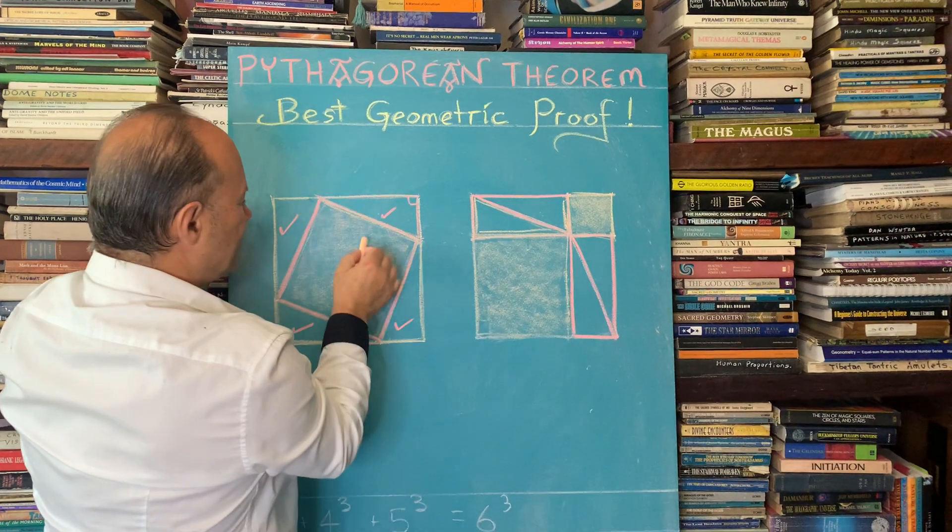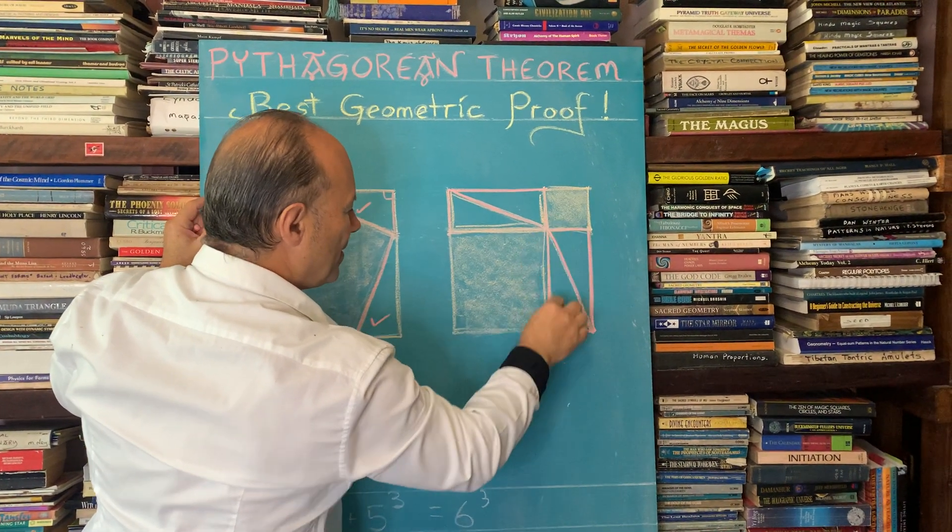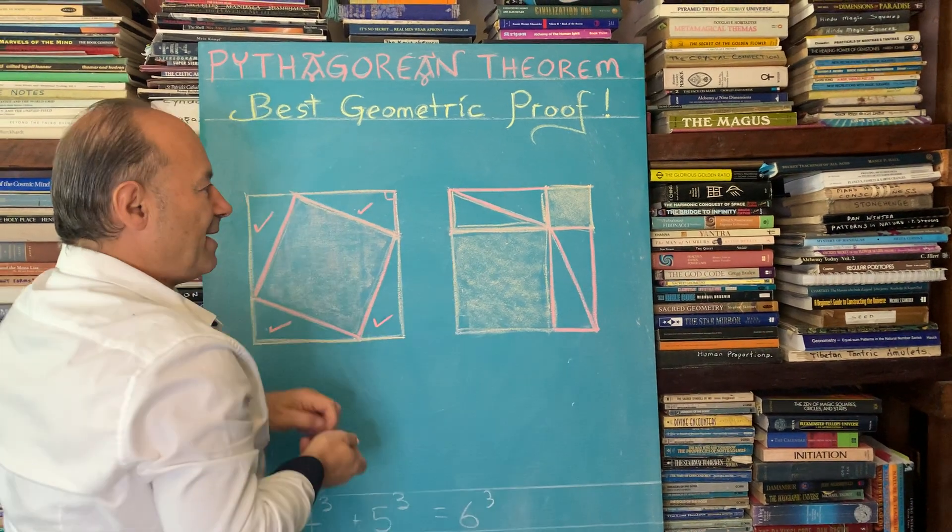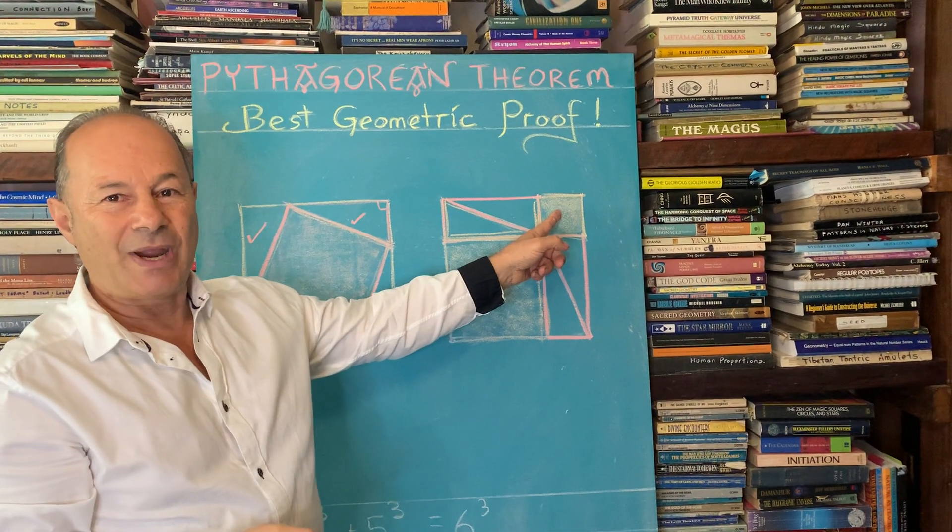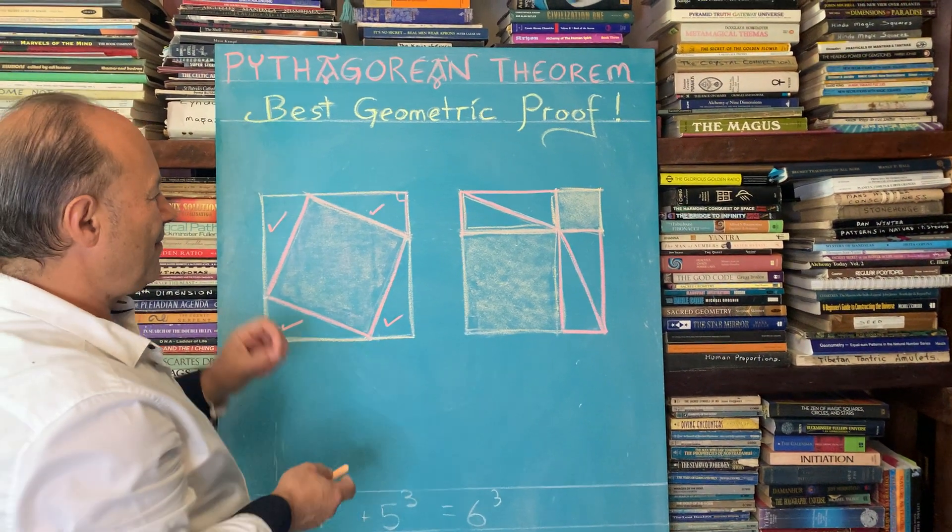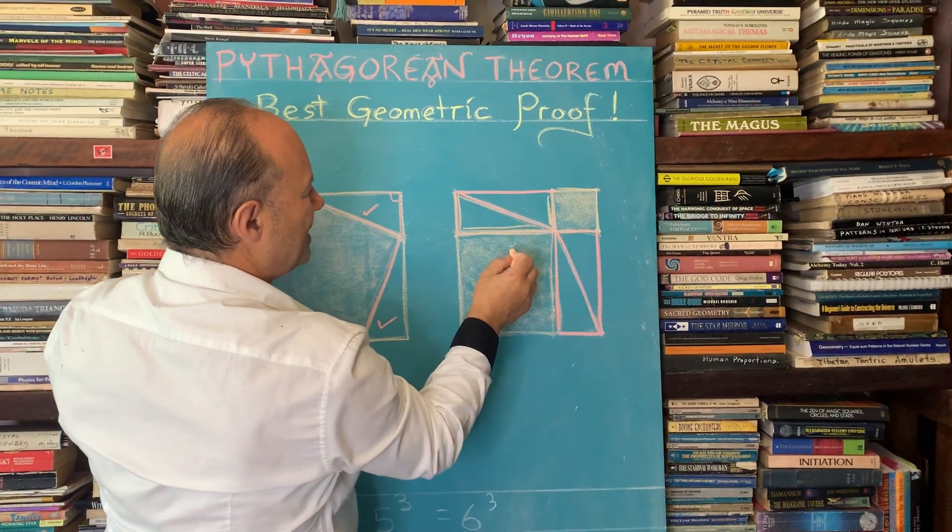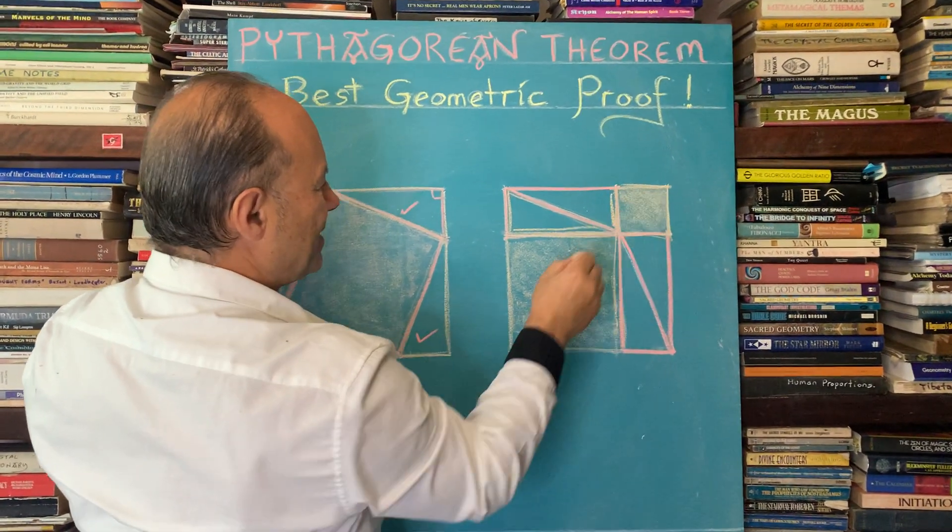This is the square on the longest side of that triangle. And where here this same area has become the square on the shorter side, and it created this little square area of the shorter side.